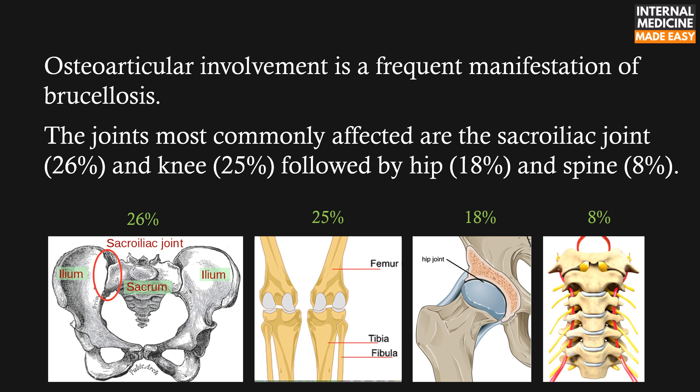Osteoarticular involvement is a frequent manifestation of brucellosis. The joints most commonly affected are the sacroiliac joint and knee, followed by hip and spine.